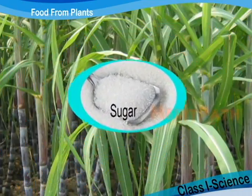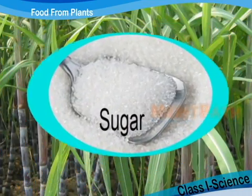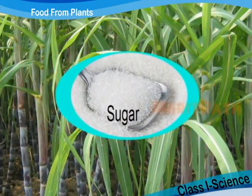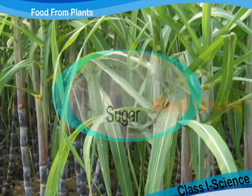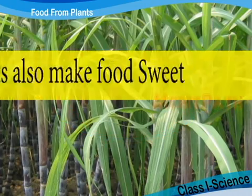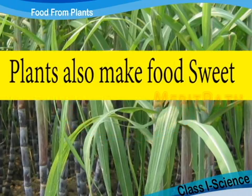Sugar is obtained from the sugarcane plant. So plants also make our food sweet.